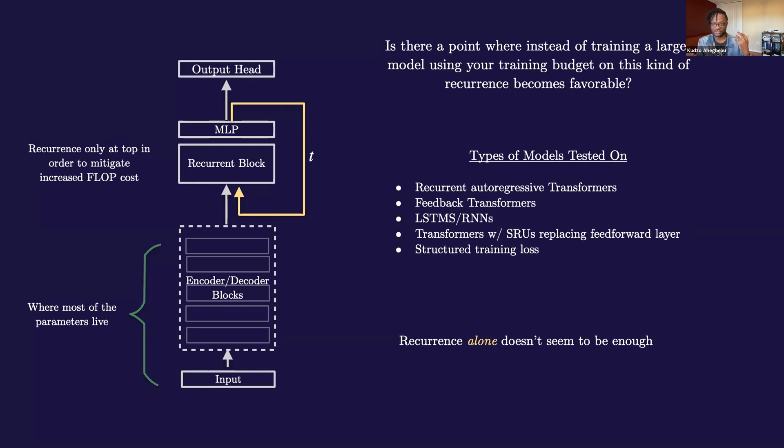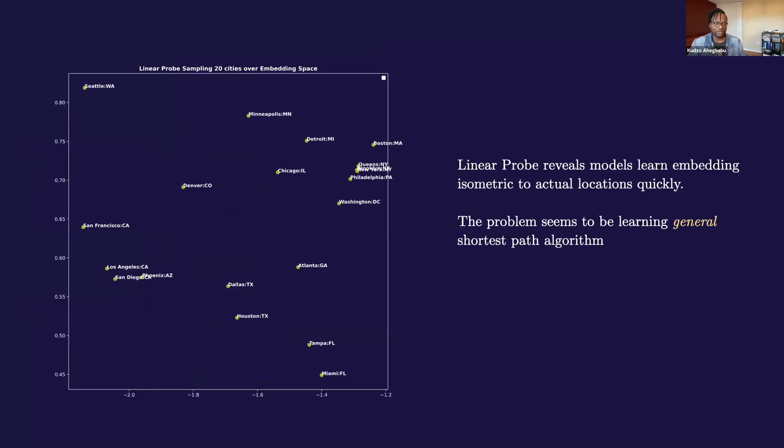Long story short, it largely doesn't seem to work. We never really see this sort of phase transition. Recurrence alone doesn't seem to be enough. To be clear, if you run a linear probe on the embedding space for these models, they actually seem to learn something like the locations or something at least isometric to the locations of the cities fairly quickly, which indicates that the problem isn't actually learning where the cities are. It seems to be that even with the extra recurrence, the extra compute, learning a general shortest path algorithm is difficult. Recurrence alone doesn't seem to be enough. We need additional structure on top of that, which is where the graph neural network stuff comes in.